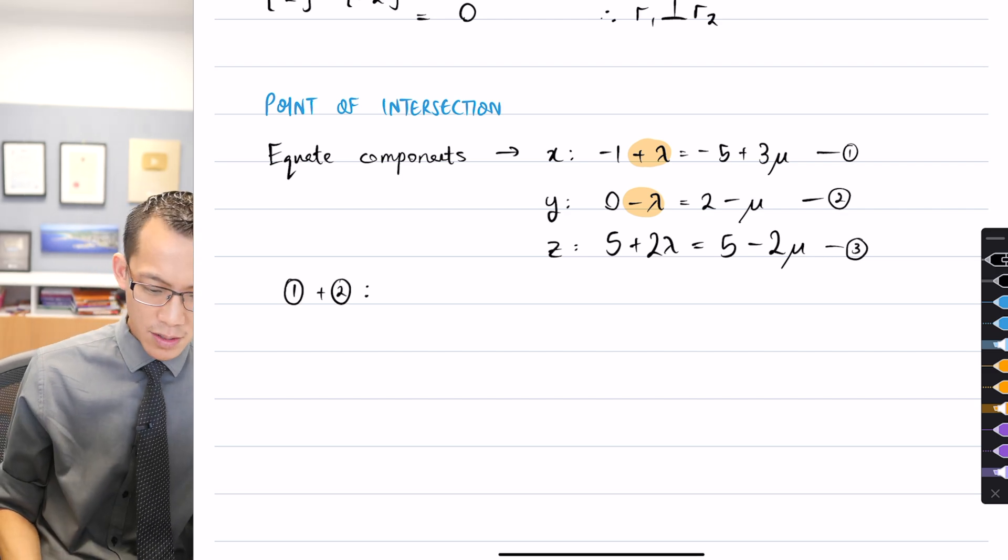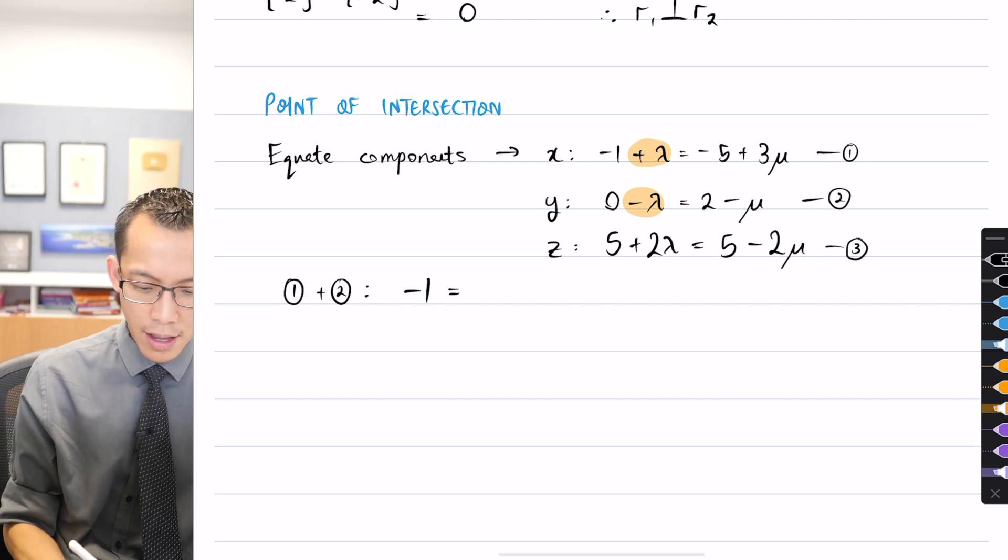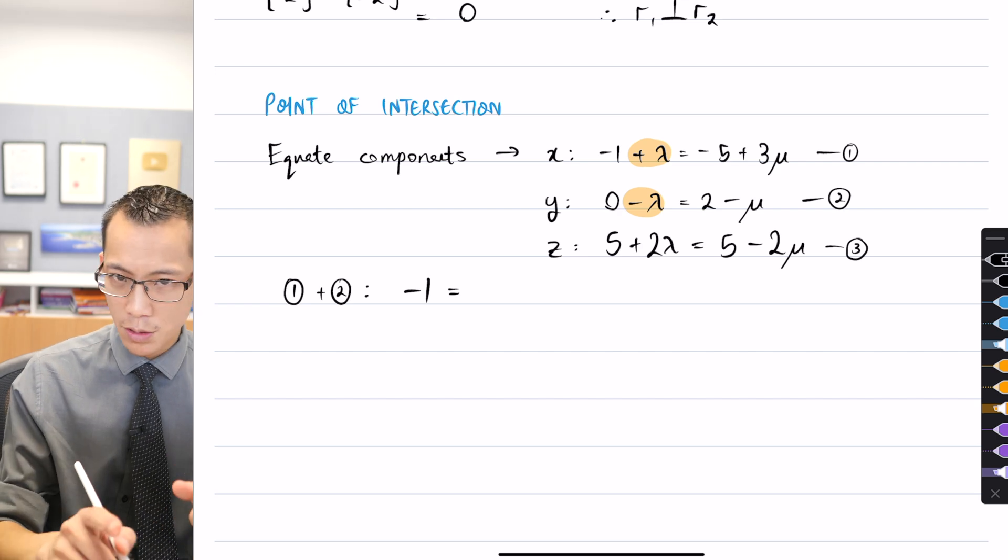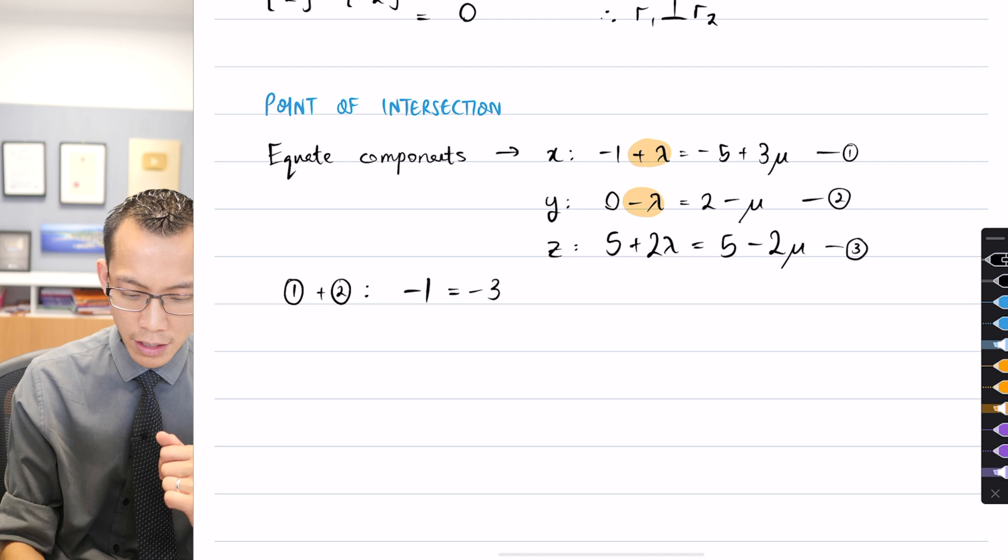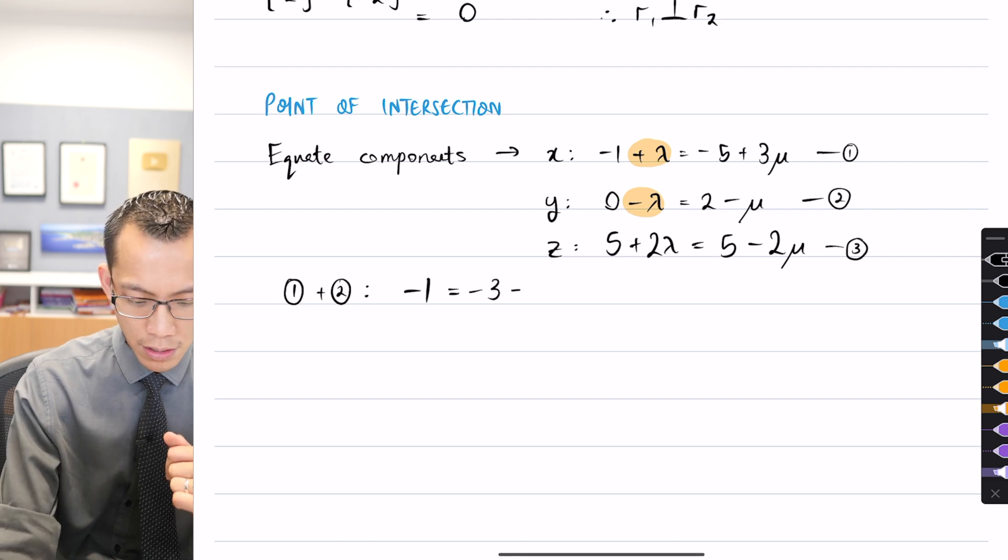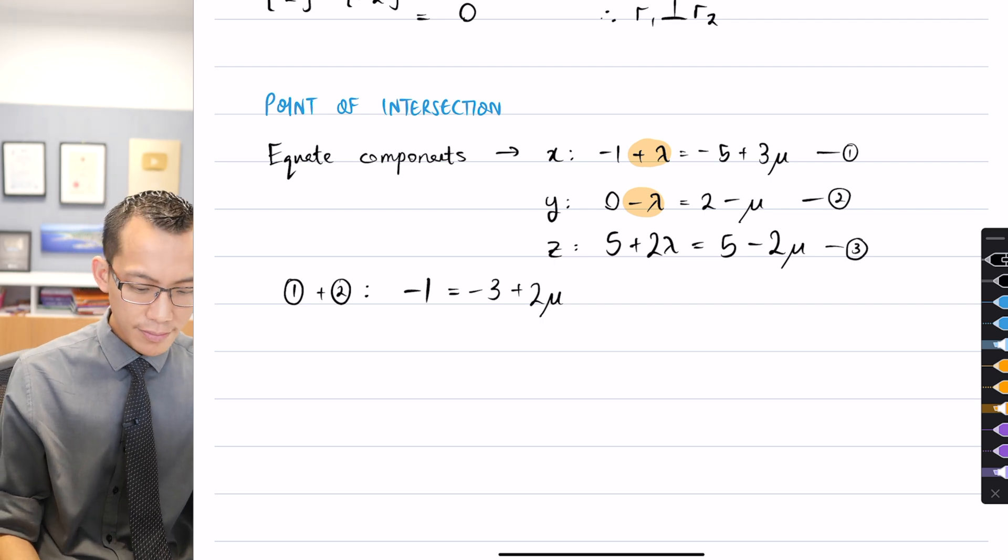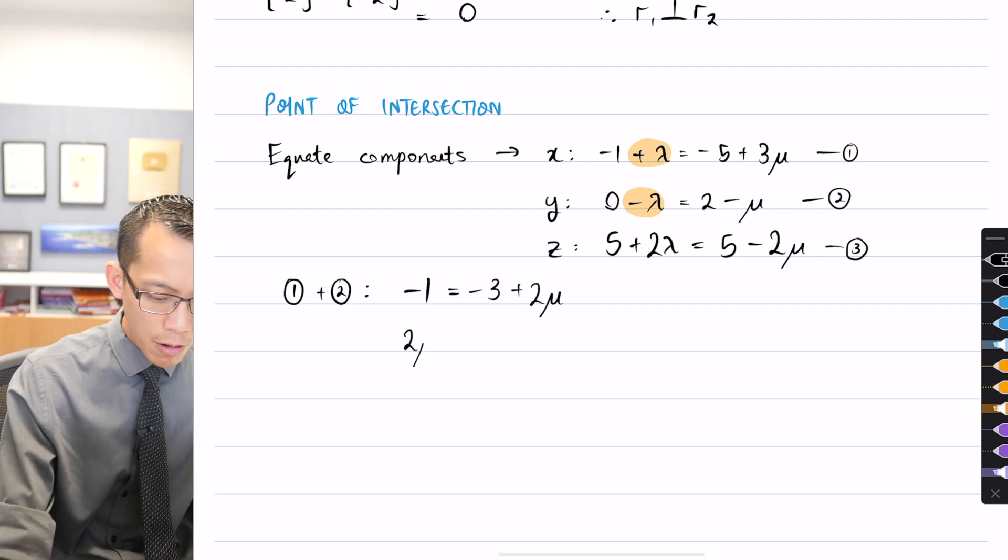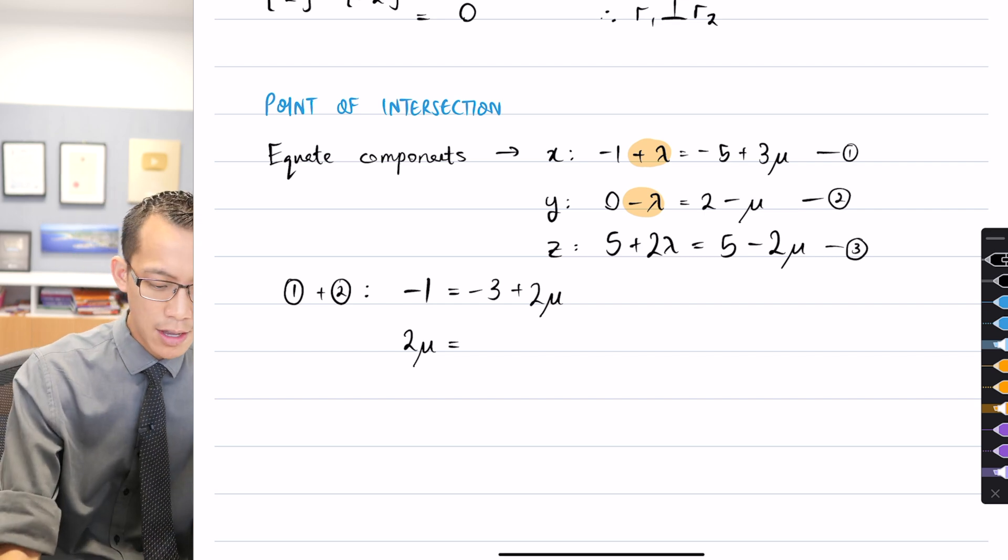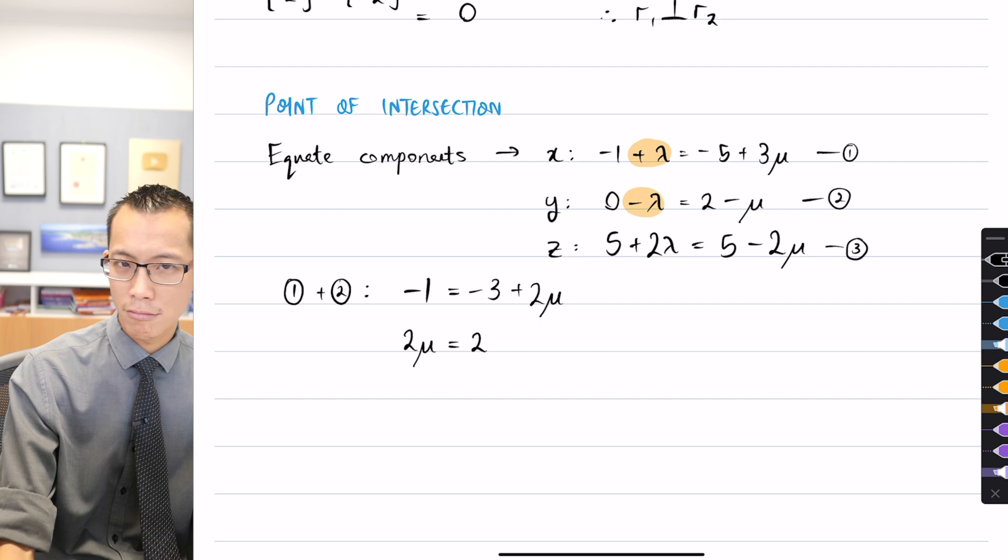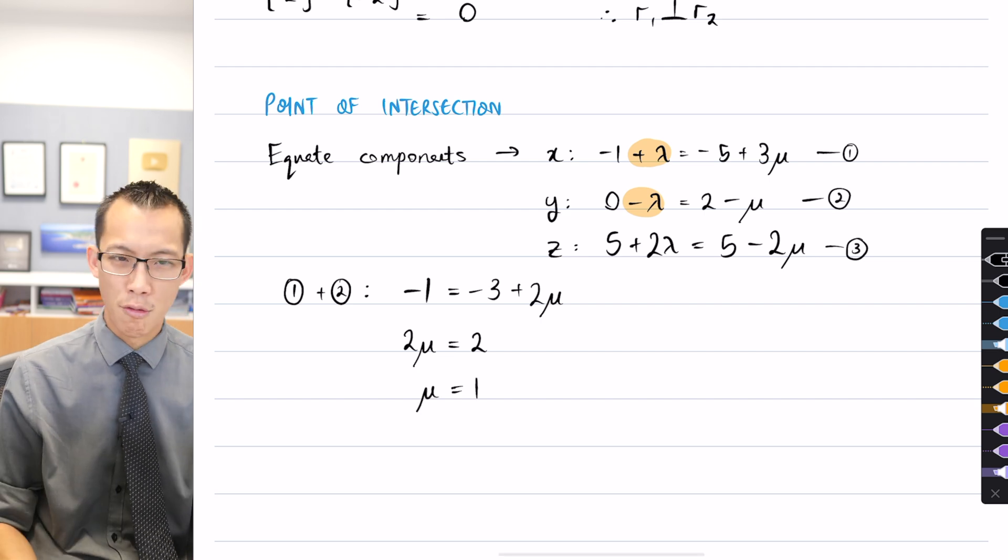And what does that give us? Well, the lambdas have cancelled, so I just get negative one over there. And then on the right-hand side, just be careful with your signs there. I'm adding the right-hand sides. So if I'm doing this right, I think I've got negative three plus two mu. Does that look right to you? I'll add three to both sides and switch the sides as well. So if I'm doing that right, I think I'm getting two mu equals two. So now I've got a value for mu.